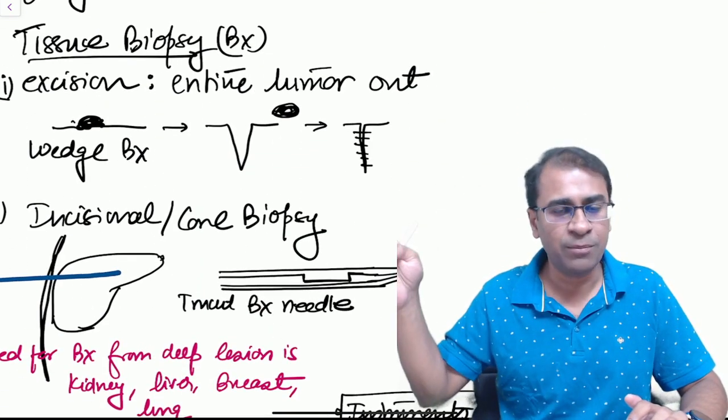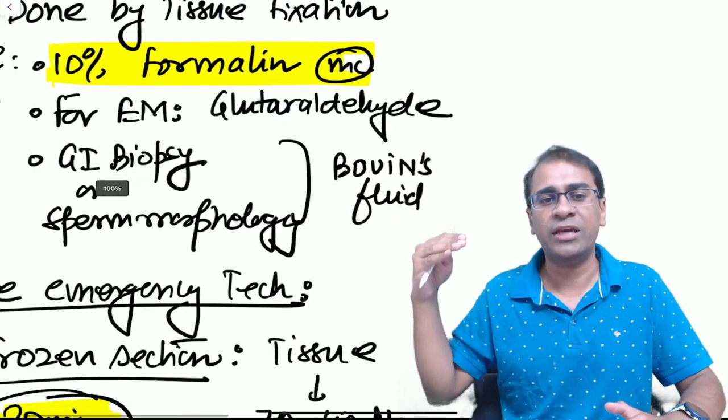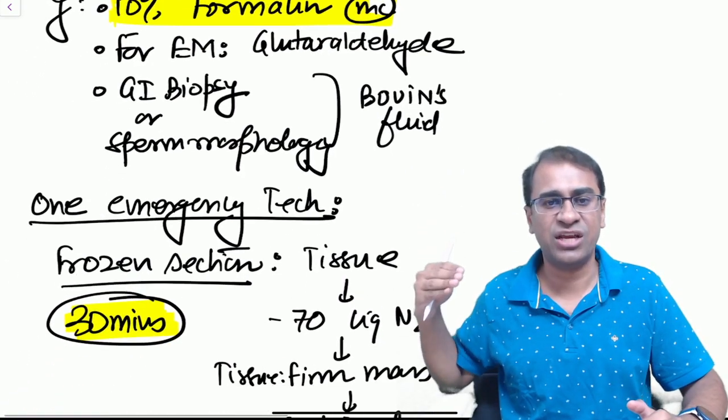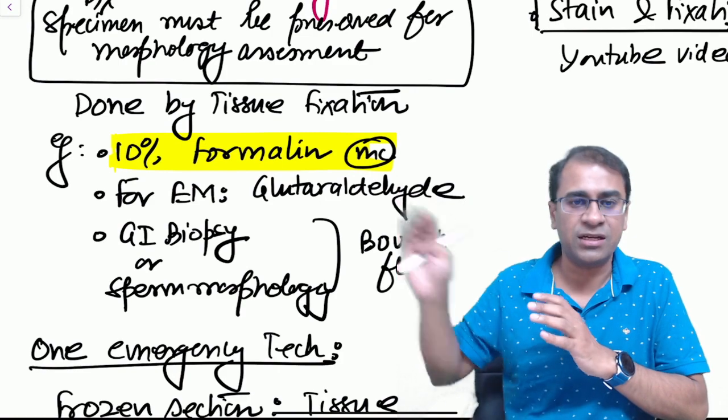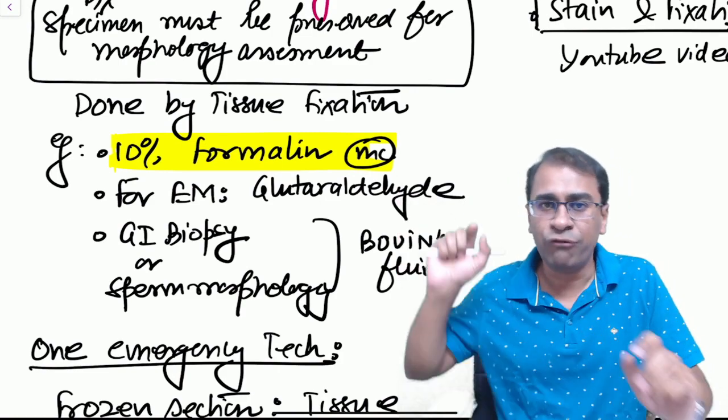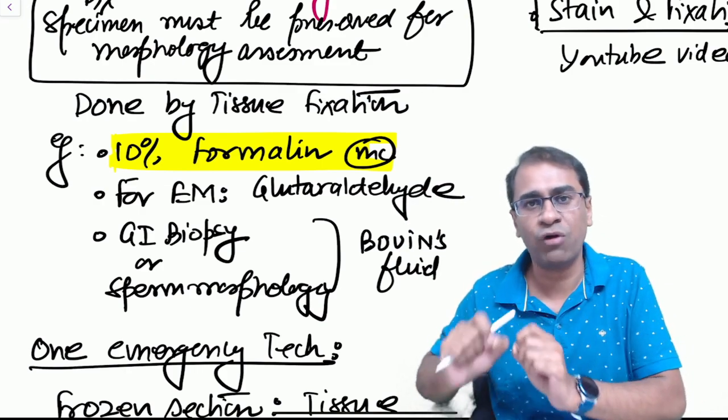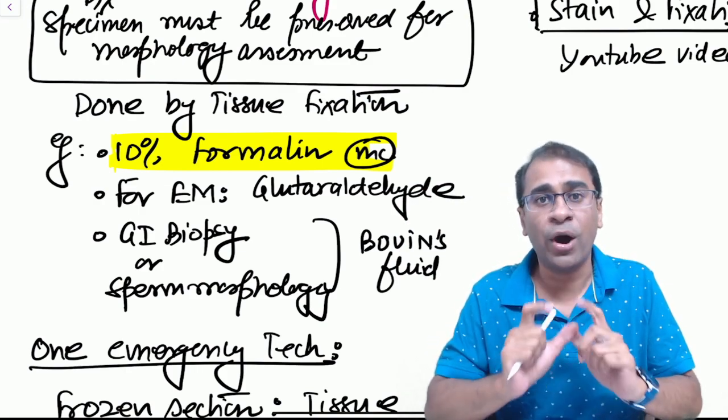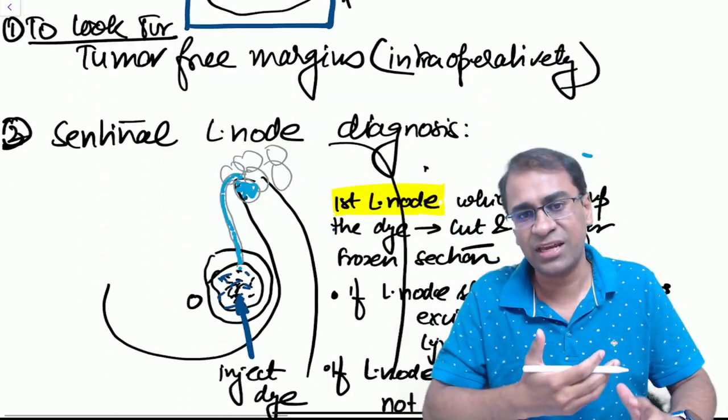You can do imprint cytology like a bone marrow touch preparation, or you can do an actual biopsy by using a wedge biopsy or an incisional or core biopsy. Very importantly, you can actually do a frozen section examination. When you do a biopsy you have to fix it by using 10% formalin. For electron microscopy you have to use glutaraldehyde, and for GI or sperm morphology assessment you have to use Bouin's fluid. This is very important.